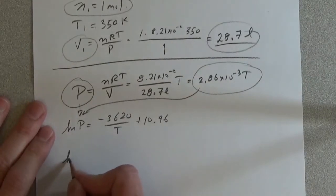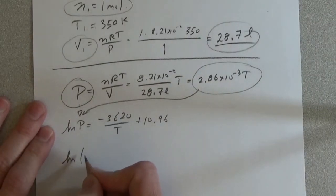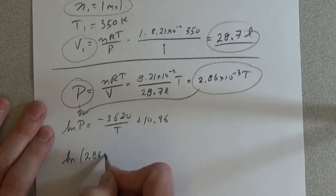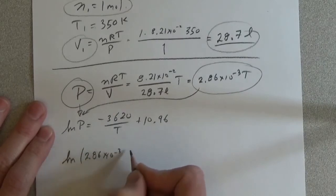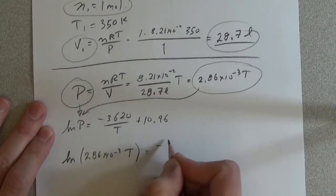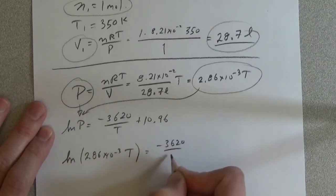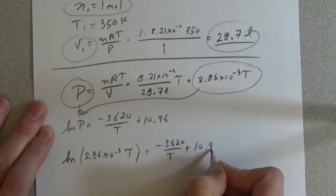So we have natural log of 2.86 times 10 to the minus 3 T is equal to minus 3620 over T plus 10.96.